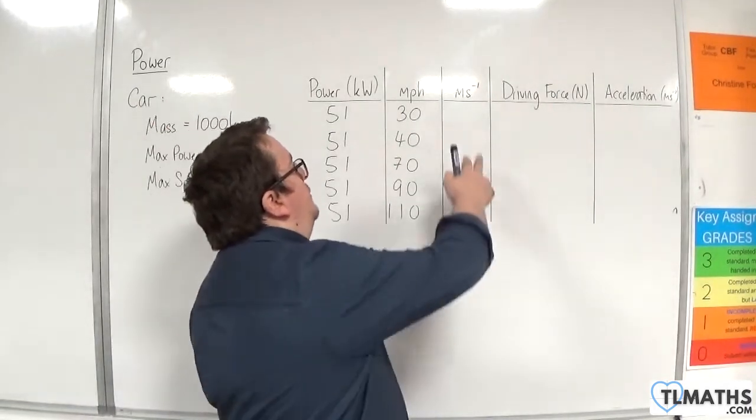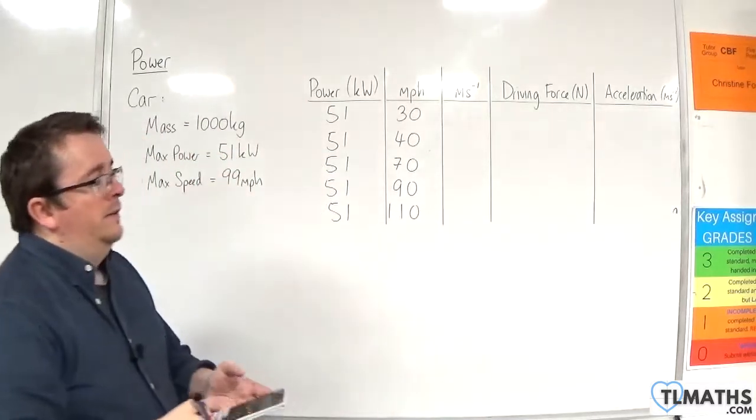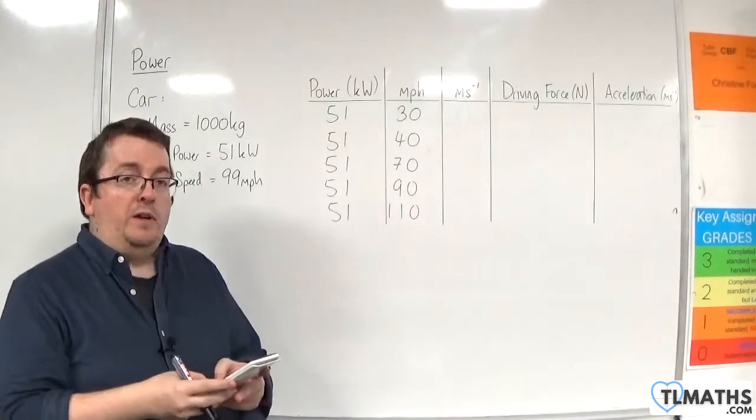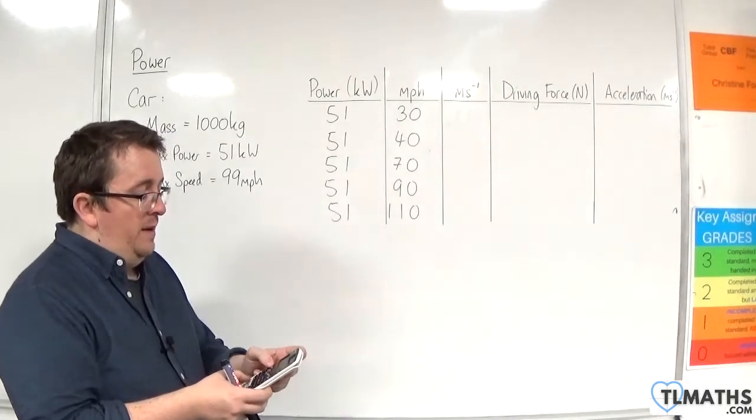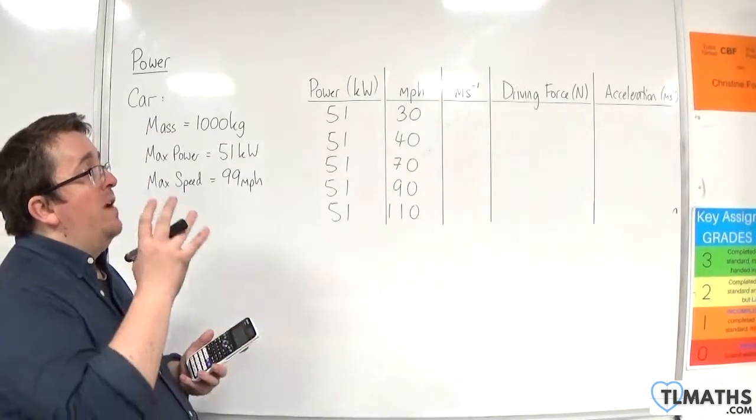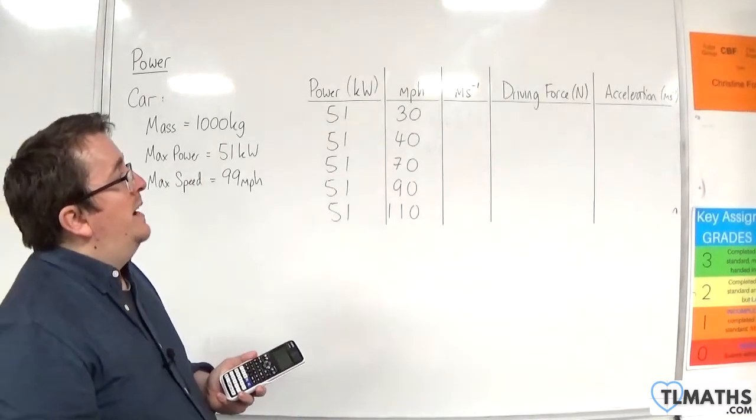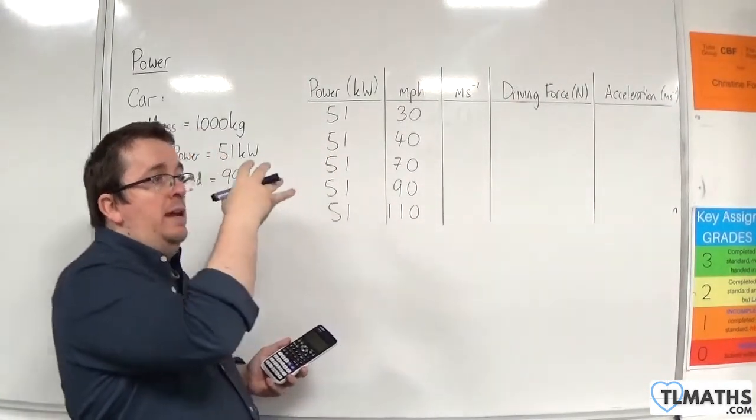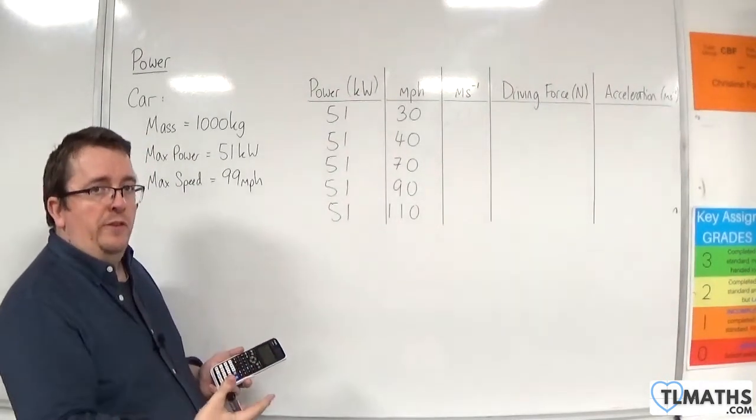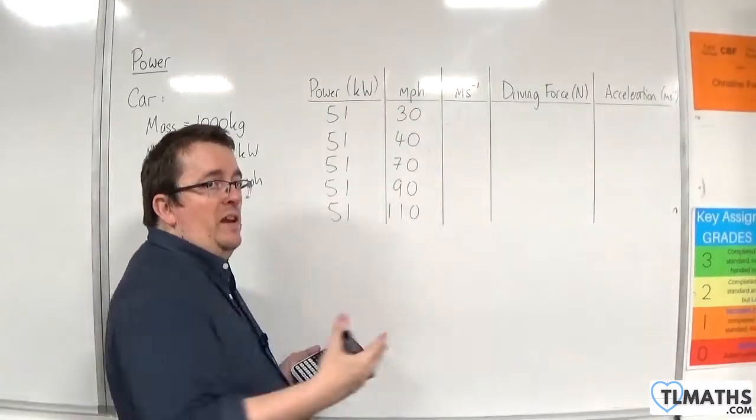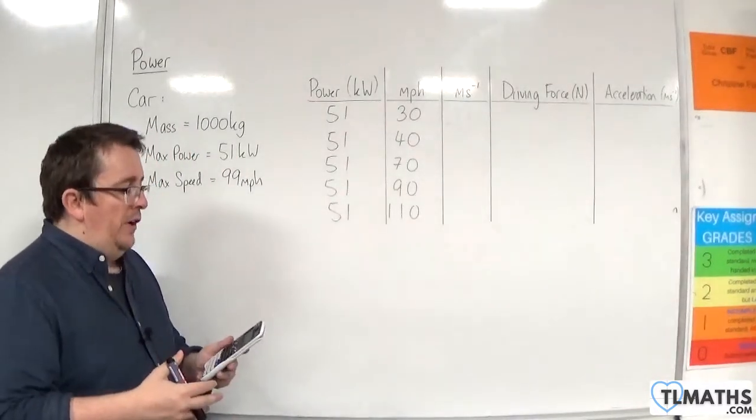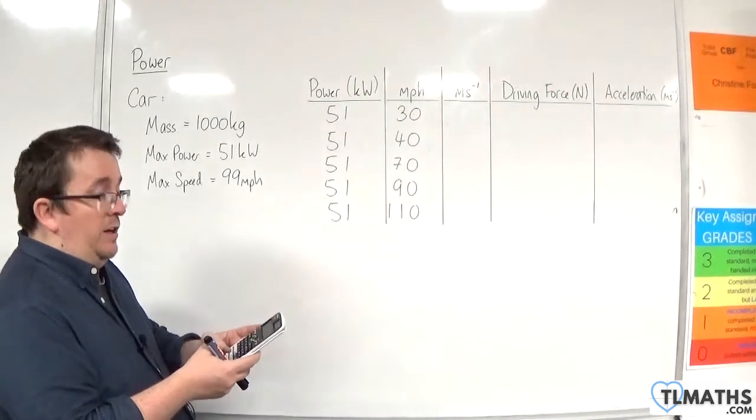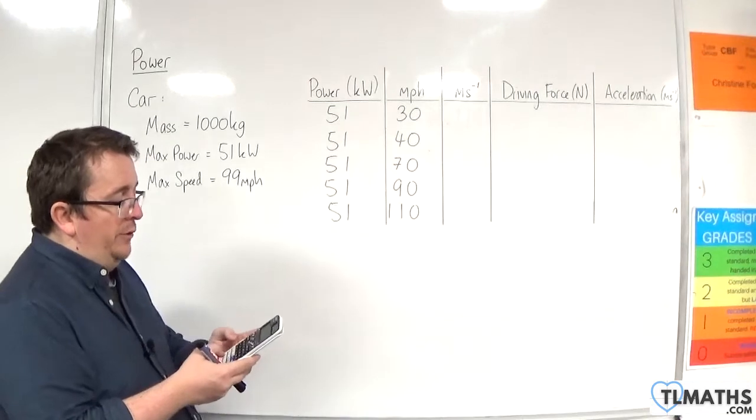Now, the first thing we're going to need to do is convert those miles per hour into meters per second. A quick way of doing this is on a Casio ClassWiz. I'm going to use the conversion. I'm going to type in 30 first, then go shift number 8. Because there's no direct conversion for miles per hour to meters per second, I'm going to first convert into kilometers, so miles into kilometers. My result would be how many kilometers per hour 30 miles per hour is, and then I need to convert that into meters per second, which there is a button for.